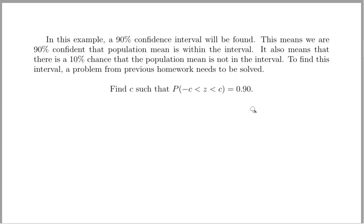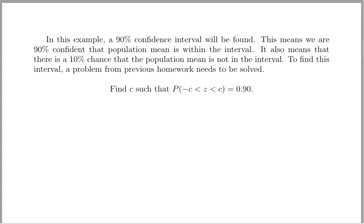Here's a problem that you've worked in a previous chapter. Find a C such that the probability that the Z value, so we're working with the standard normal curve, is between minus C and C, and that probability that Z is between those two numbers is 90%. I'm not going to review in this overview how that was done, but here was the idea.